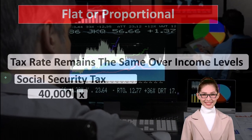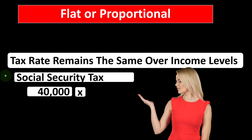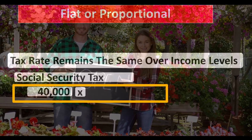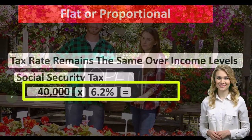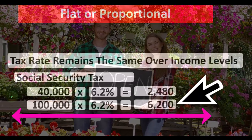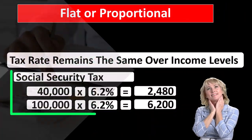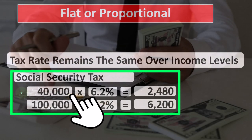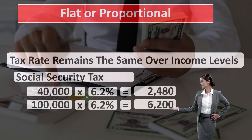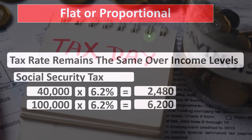Social Security is reported on W-2s and connected to income taxes; if you have your own business you're self-employed and have to deal with the Social Security component when filing income taxes. For example, at a rate of 6.2%: $40,000 × 6.2% = $2,480; $100,000 × 6.2% = $6,200. That's essentially a flat tax. The benefit is that it's easy to make projections and budgets — if the rate stays the same, calculating next year's tax bill is straightforward.